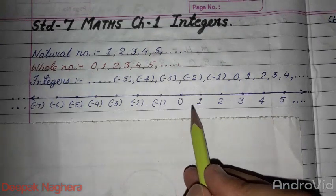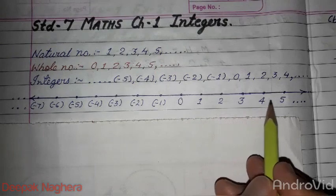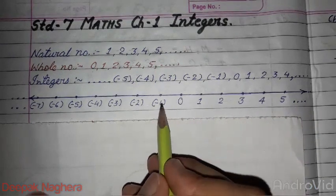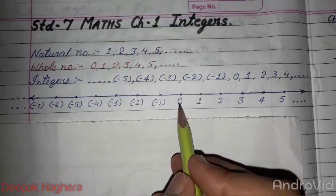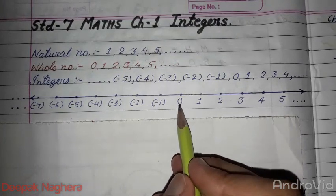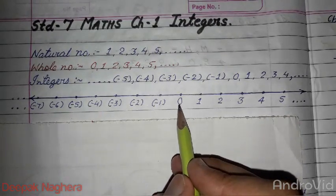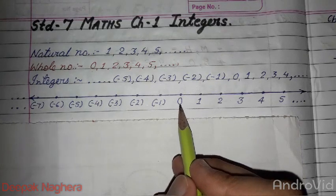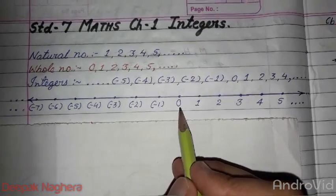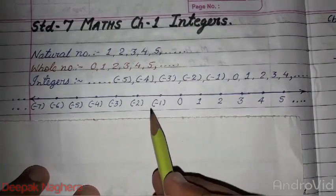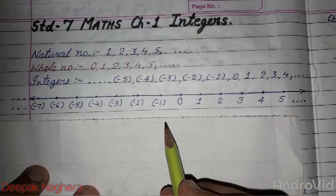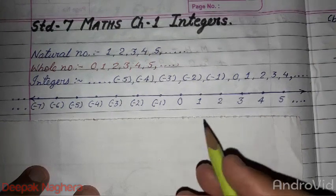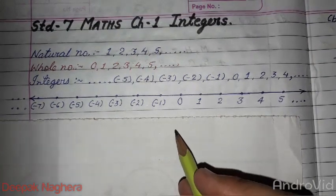These are all positive integers. Minus 1, minus 2—these are all negative integers. Zero is also an integer, but we cannot write plus or minus with it. This is the specialty. So in the next video, we will be able to solve questions. Thank you.